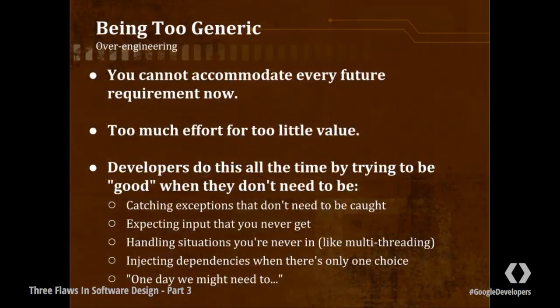People want to catch every exception, but there are some exceptions that don't need to be caught, that you really should just let bubble up to the surface, because otherwise you're hiding errors and it actually makes it harder to debug the system. When you try to handle input that you never get — as we saw in the code review for the first flaw — or handling situations you're never in, like trying to make thread-safe code that doesn't need to be thread-safe, it's a nightmare. You're adding locks everywhere, and it really just adds a week of work to a project that should have taken a day.